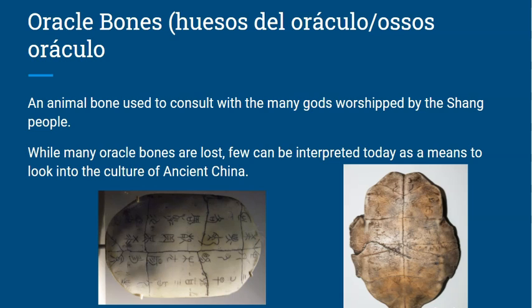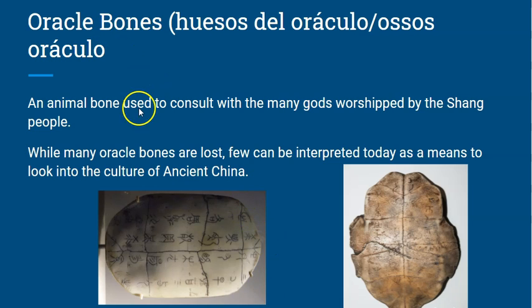Our next vocab word is oracle bones. Oracle bones are animal bones used to consult with the many gods worshipped by the Shang people under the Shang dynasty. While many oracle bones have been lost over time, a few can still be interpreted today and give us a window into the culture of ancient China. These bones — including turtle shells and ox leg bones — have writing and inscriptions on them.